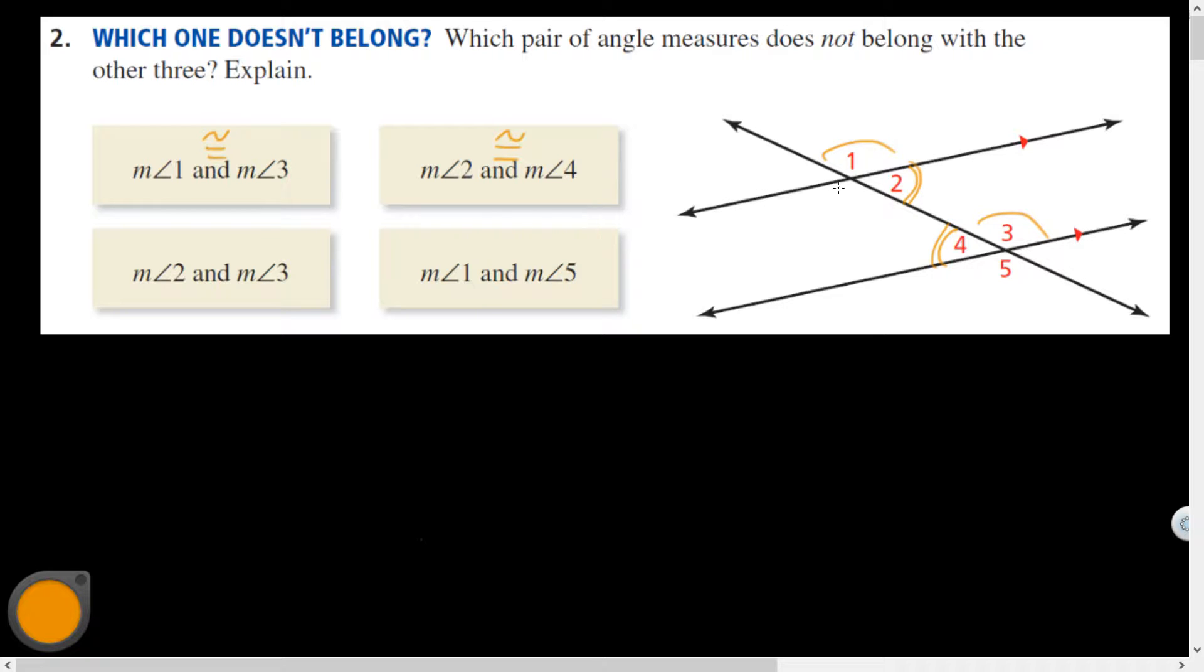Angles 2 and Angle 3, those are consecutive interior, those are supplementary. And Angle 1 and Angle 5 are opposite exterior, those are congruent.